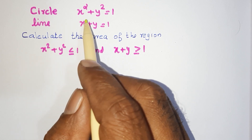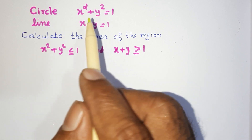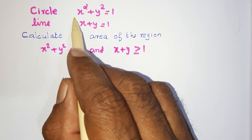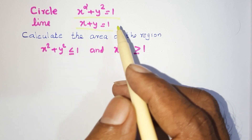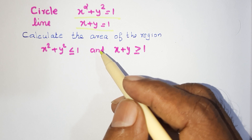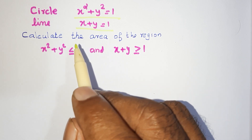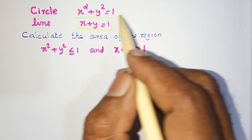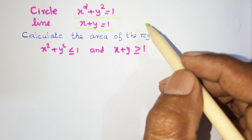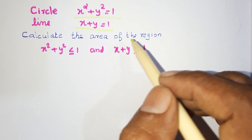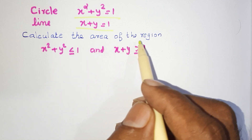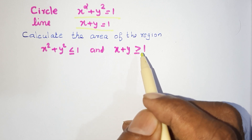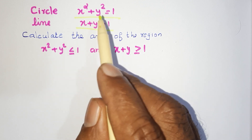Circle: x squared plus y squared equals 1. This is a circle. Line equation: x plus y equals 1. Find the points of intersection of this circle and this line. Calculate the area of the region bounded by x squared plus y squared equals 1 and x plus y equals 1.